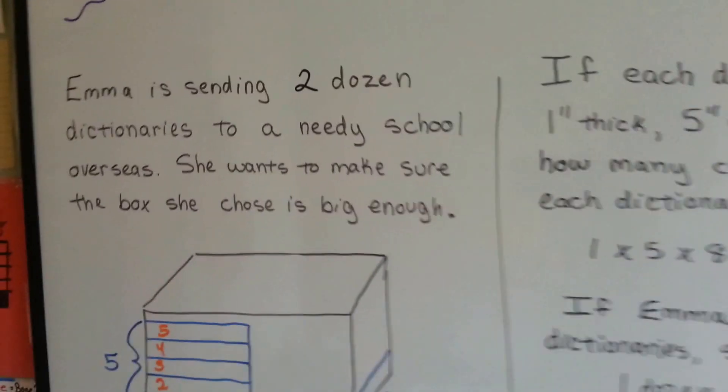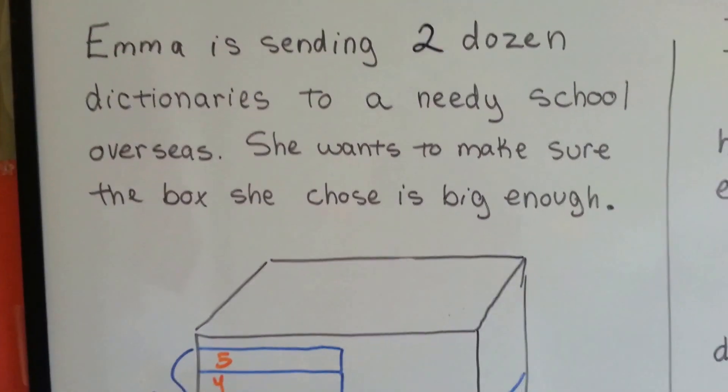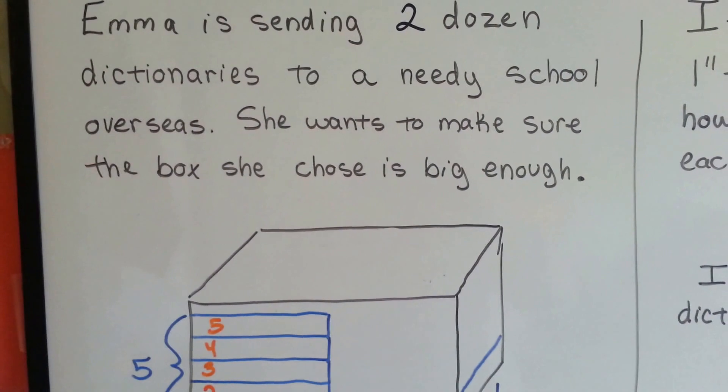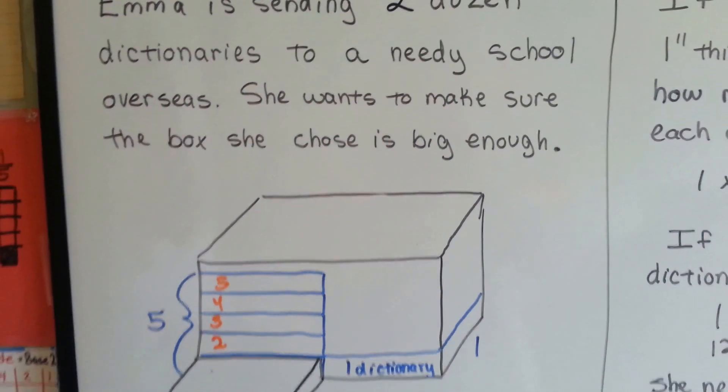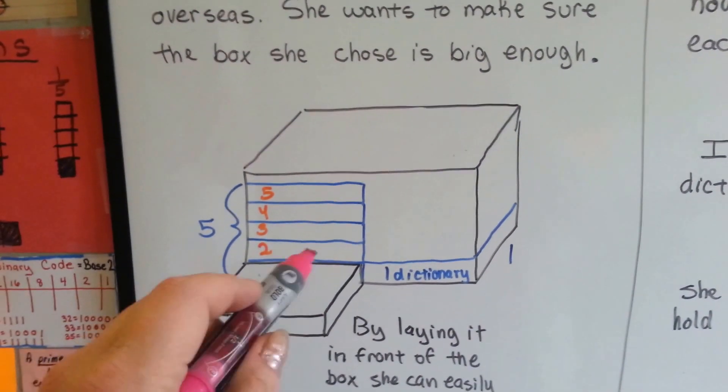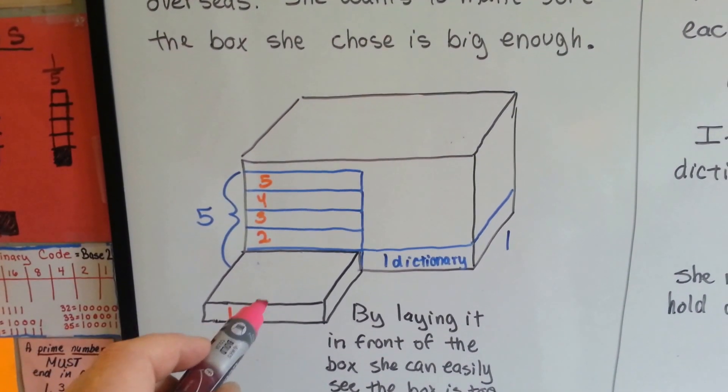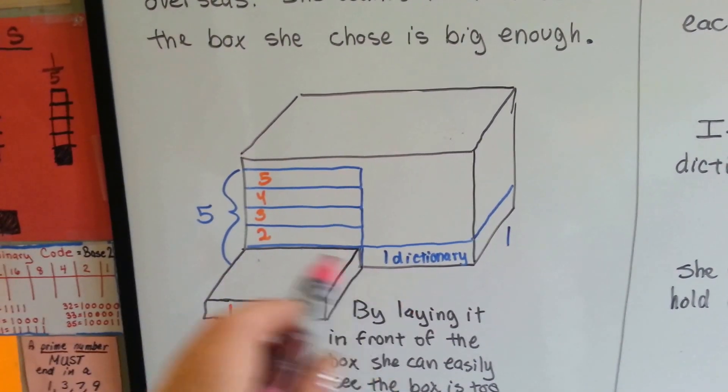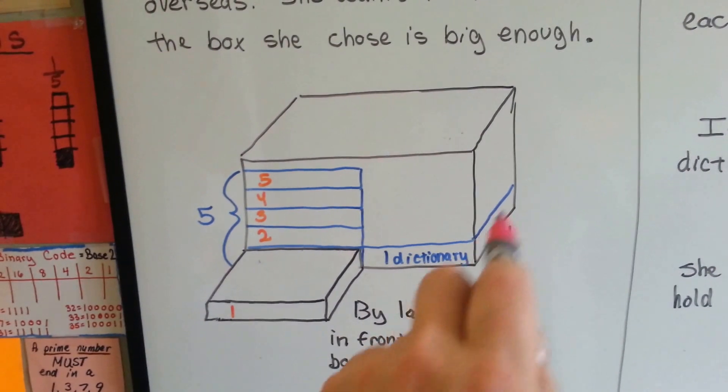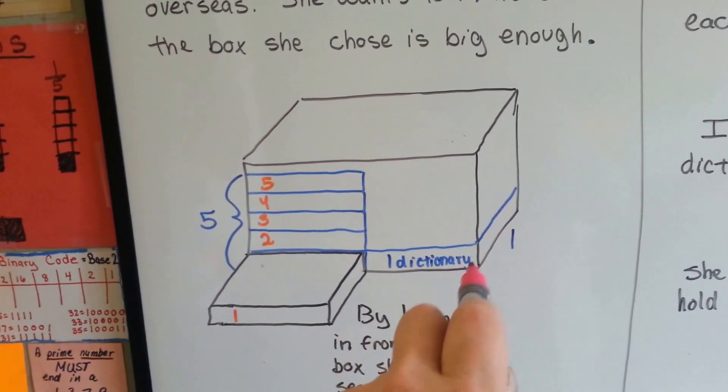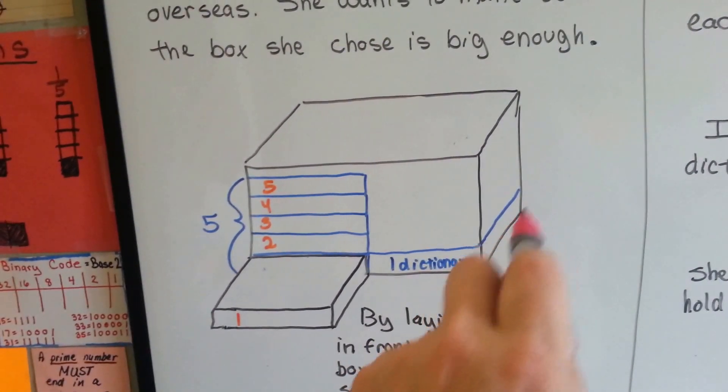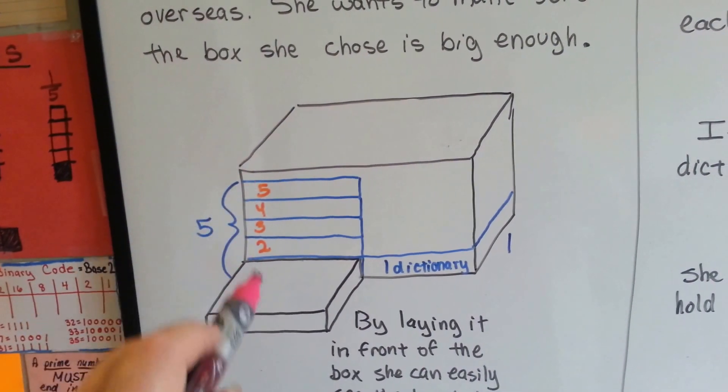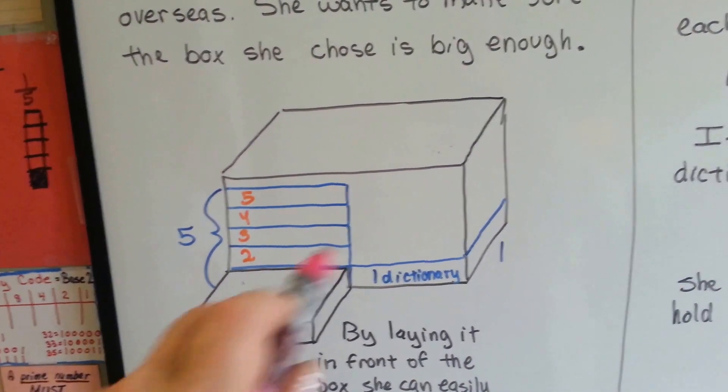Emma is sending two dozen dictionaries to a needy school overseas, and she wants to make sure the box she chose is big enough. She took one dictionary and laid it in front of the box. She noticed that she could fit two across perfectly, but only one deep, or wide, would fit.